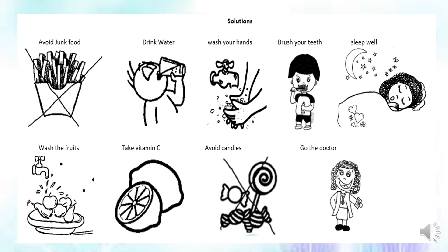Remember: fever — que era fiebre. Sore throat — que era dolor en la garganta. Earache — recuerden que ear es el oído, la oreja, entonces earache era el dolor de oído. También teníamos headache — que es cabeza. Teníamos toothache — tooth, que son los dientes, entonces teníamos toothache. También teníamos stomachache — stomach, dolor de estómago. Y también tiredness — tire, cuando estamos cansados, desganados, aburridos. Practiquemos ese vocabulario.